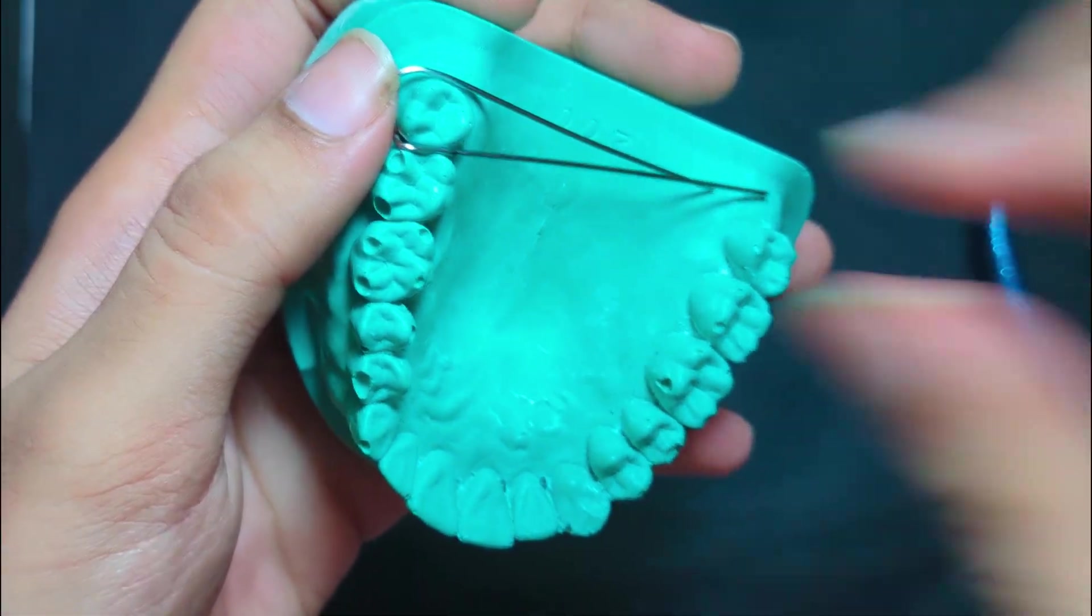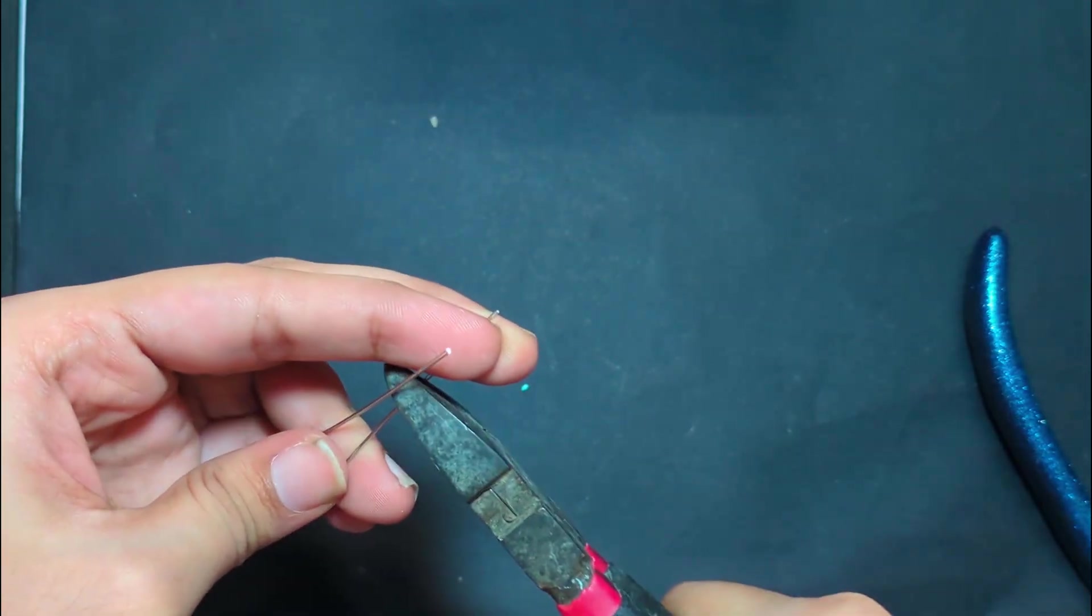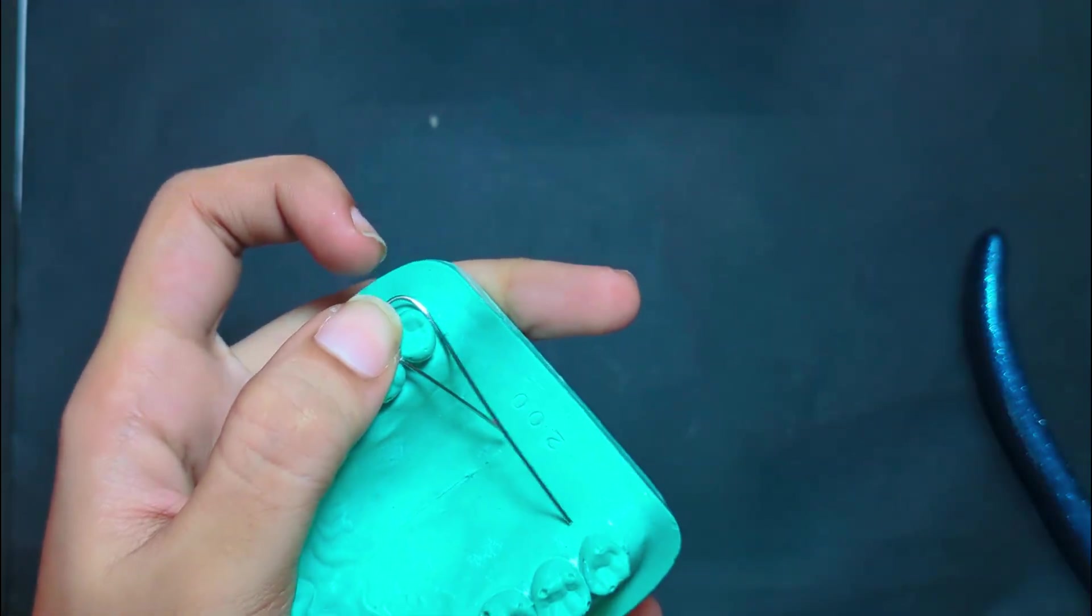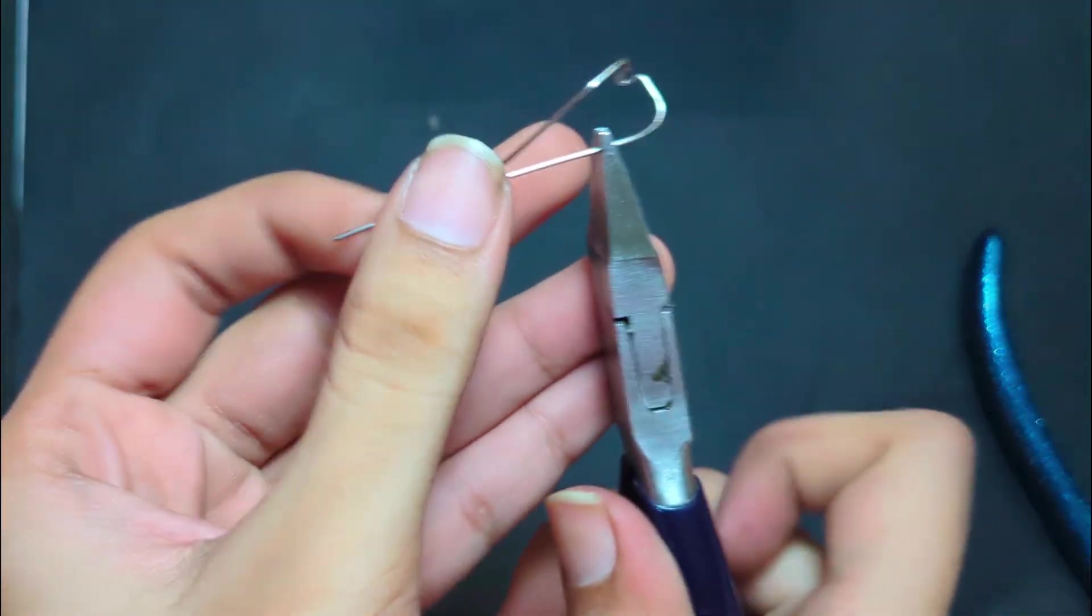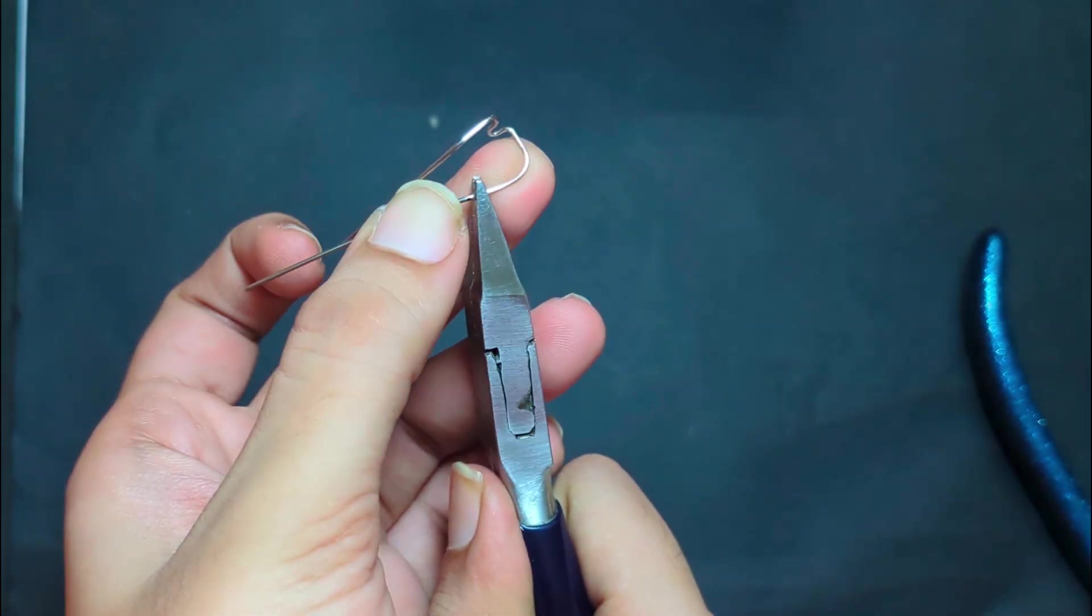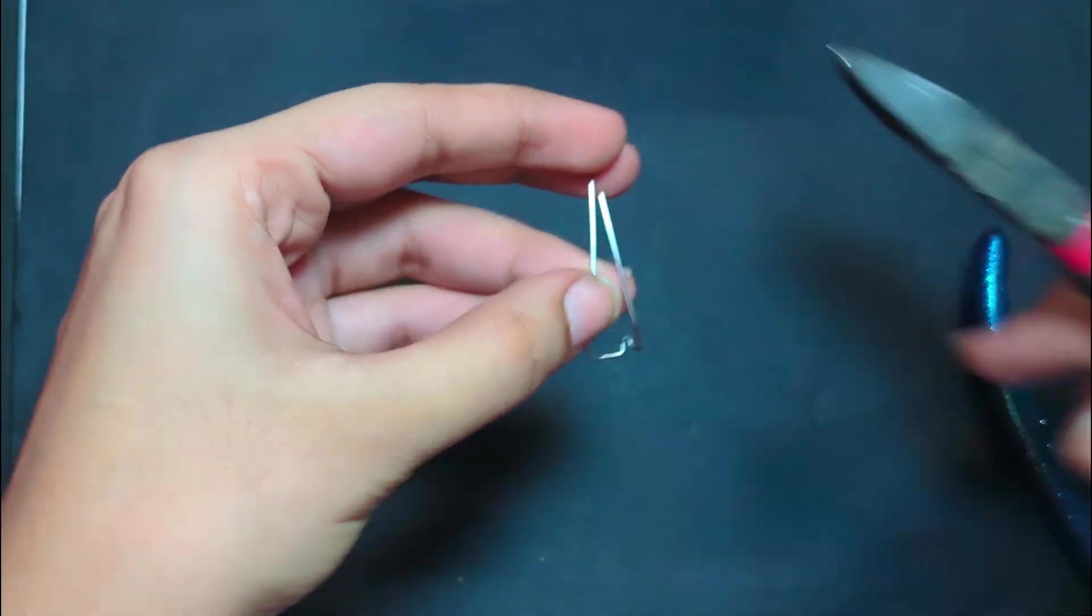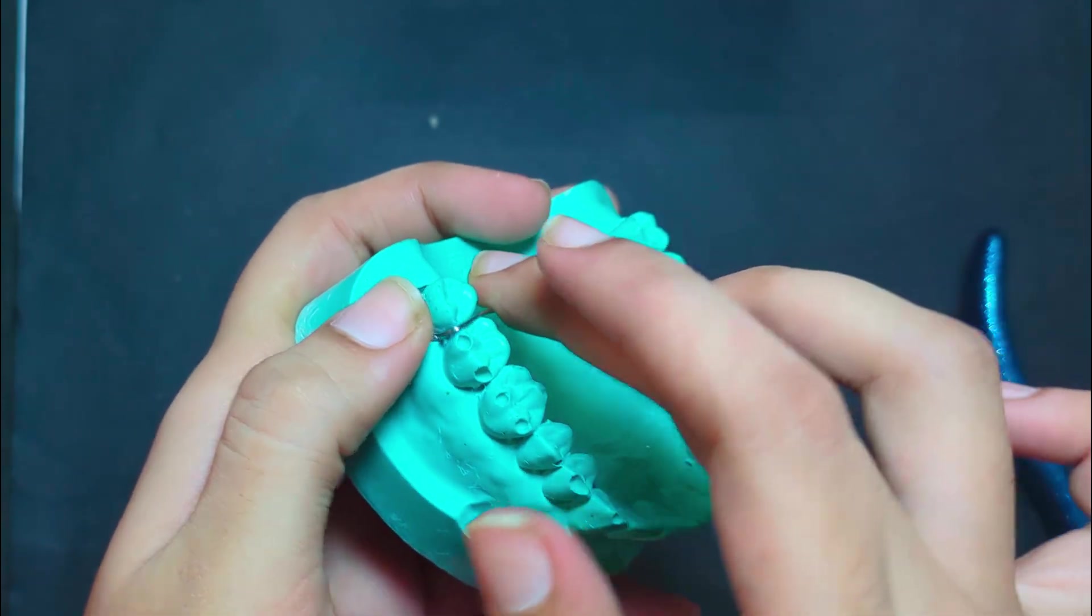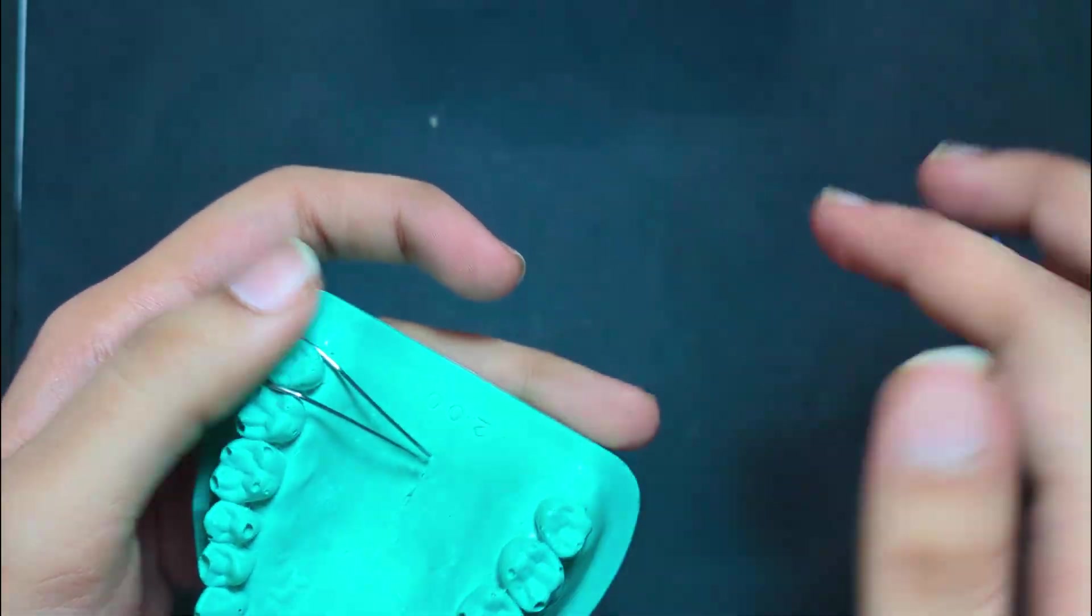Mark the point and give a bend to allow it to rest on the clasp. Similar to the other end of the clasp, make the other end rest on the tissue surface.